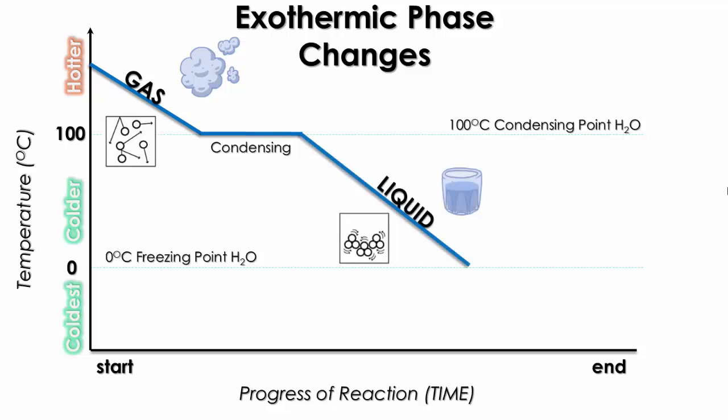As it continues to lose more heat, it will cool itself down to the zero degrees freezing point. At this temperature, that's when the liquid will become equilibrium with the solid phase. At this point, we now have our solid.